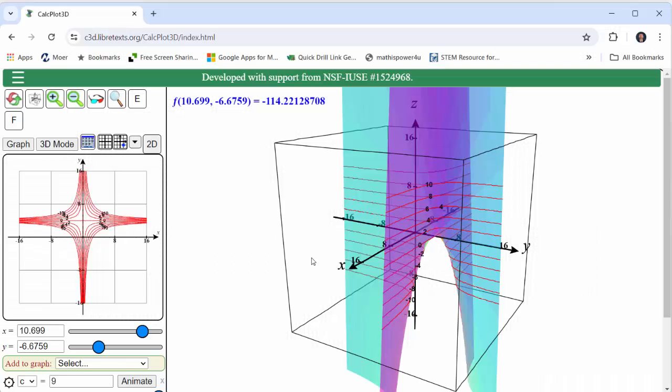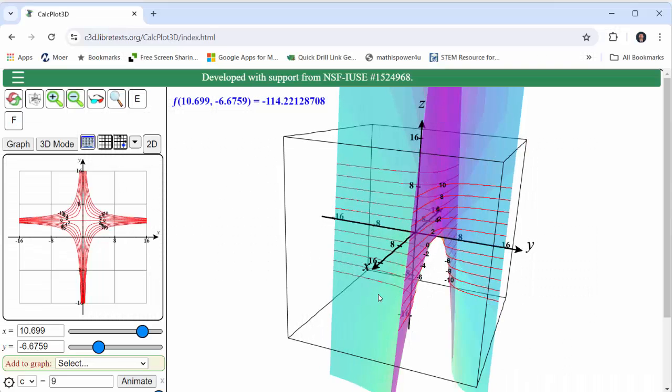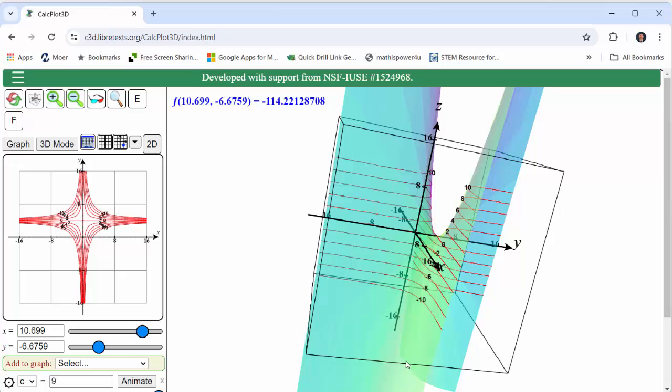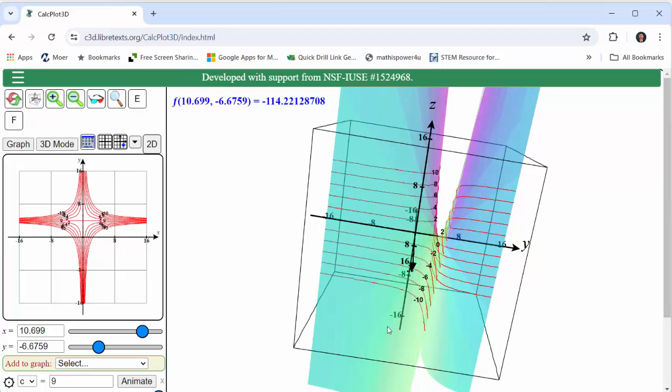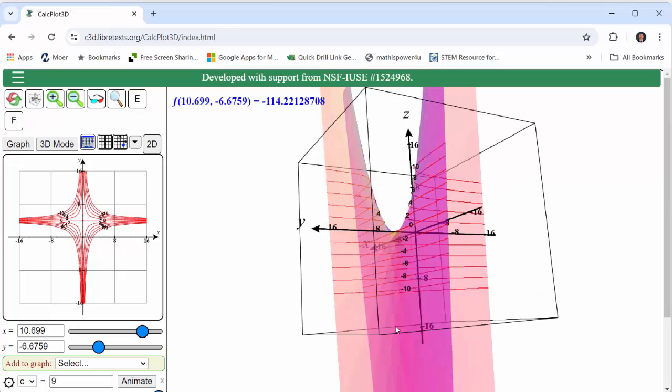Let's first look at this graphically. On the right, we have the graph of the surface given by f(x, y) and these red curves are level curves for various values of c.